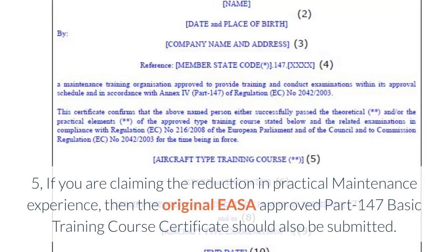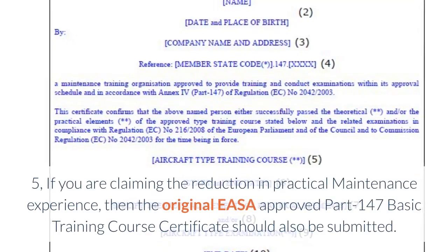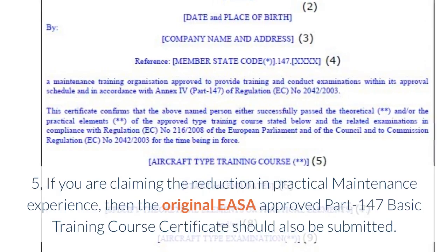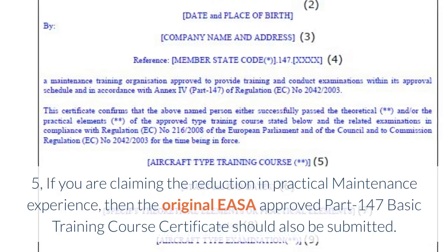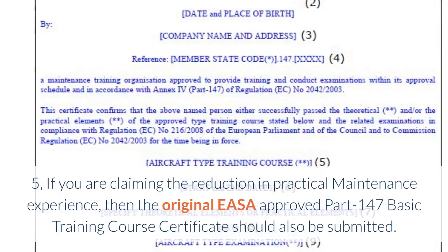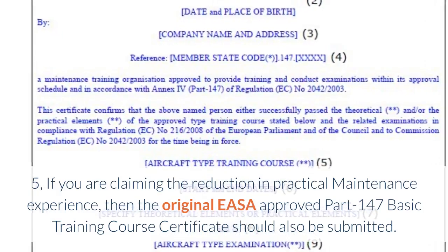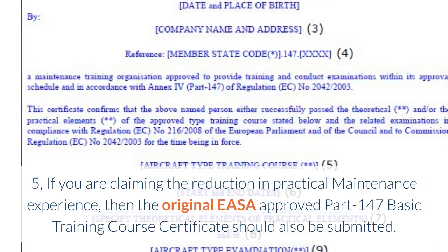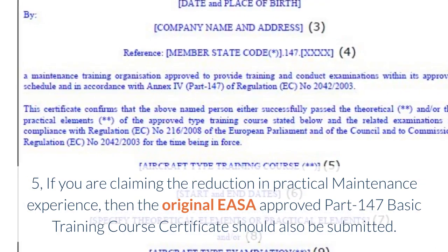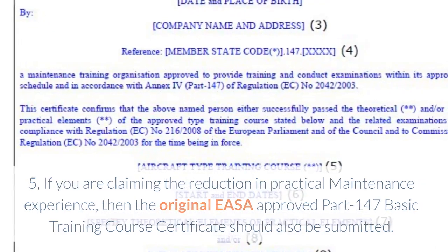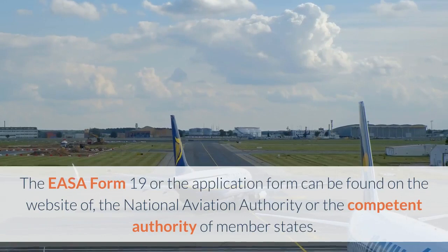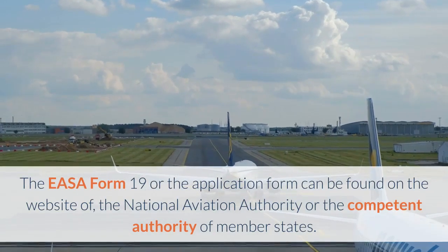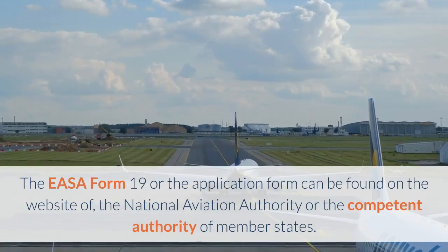Number five: if you are claiming a reduction in practical maintenance experience, then the original EASA approved Part 147 basic training course certificate should also be submitted. The EASA Form 19, or the application form, can be found on the website of the national aviation authority or competent authority of member states.